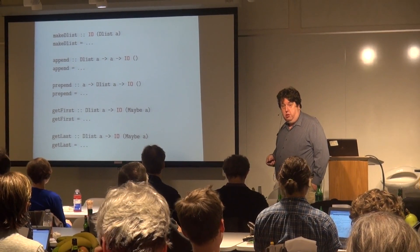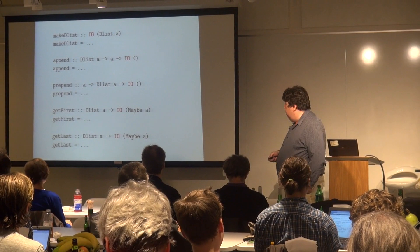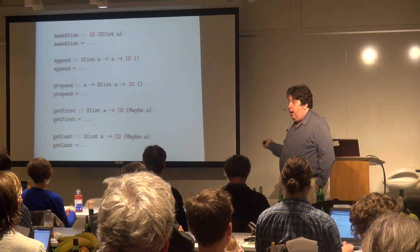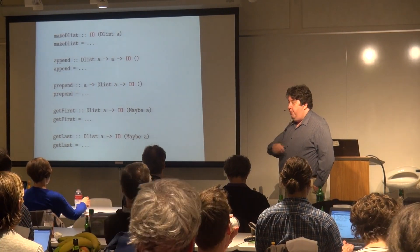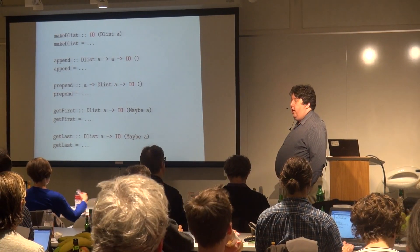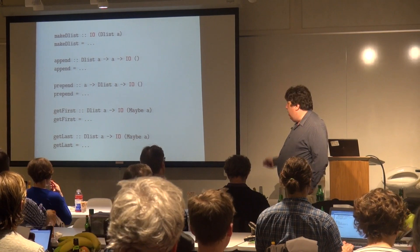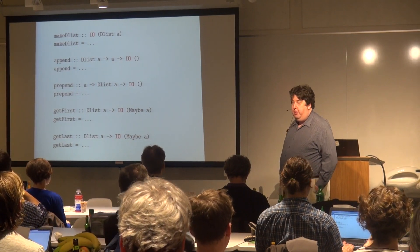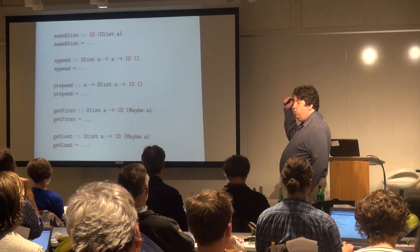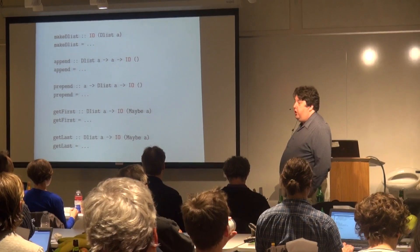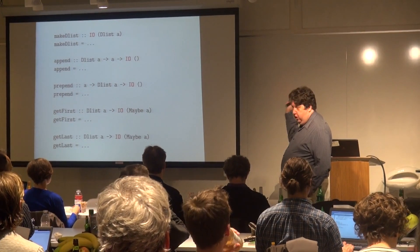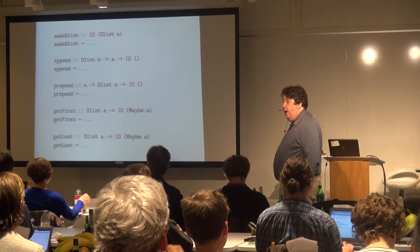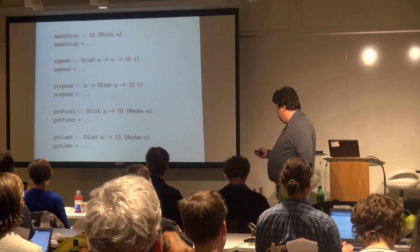We have to be in the IO monad for various reasons, and this percolates through our entire program. Now every time we're touching a doubly-linked list, we have to be in the IO monad — any module that might be touching code that's touching code, and so on. Now everything's in the IO monad.